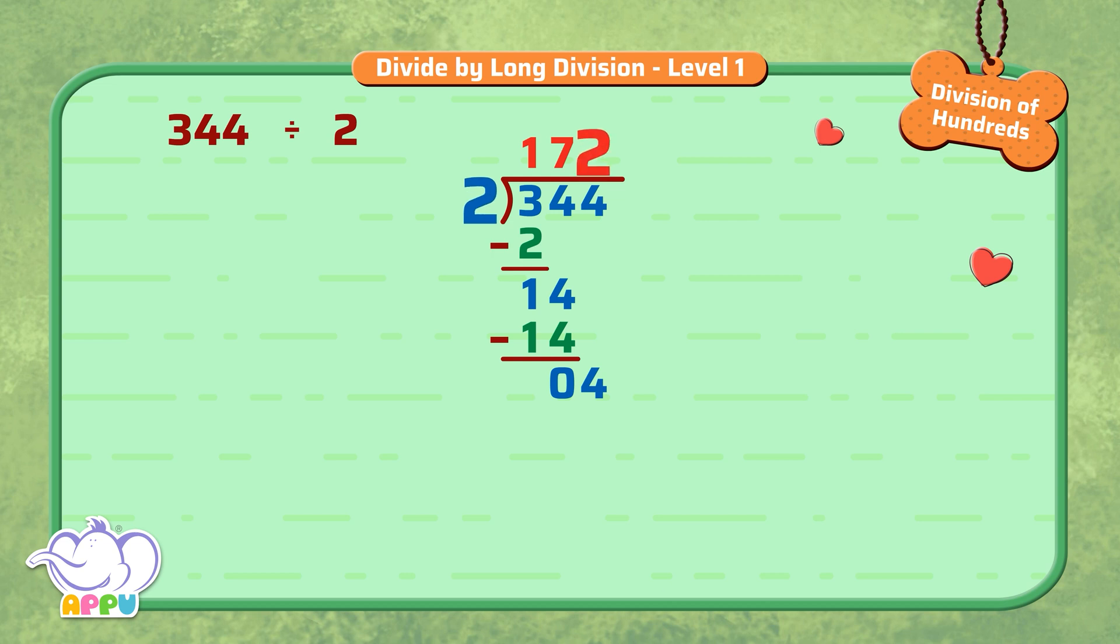We multiply 2 and 2, we get 4. We subtract 4 from 4, we get 0. We stop division because 0 is less than 2.